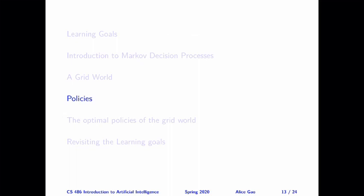When we're solving a Markov decision process, we are looking for a policy which tells the agent what to do. Now, it is non-trivial to think about what a policy looks like for a Markov decision process. That's what we're trying to figure out in this video.